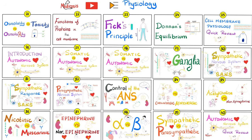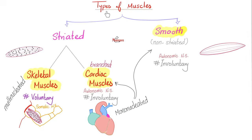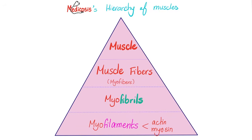Please watch the videos in this playlist in order. In the previous video, we talked about three types of muscles: skeletal, cardiac, and smooth — voluntary, involuntary, involuntary. Your body has about 640 muscles. Each muscle is made of muscle fibers or myofibers or myocytes. Each muscle fiber is made of myofibrils and each fibril is made of myofilaments. We have two types of filaments: thin actin and thick myosin.